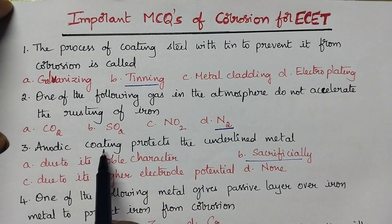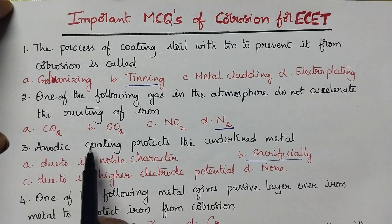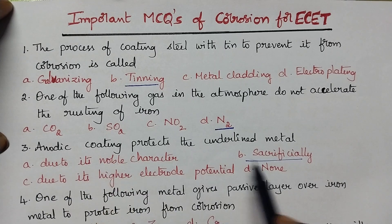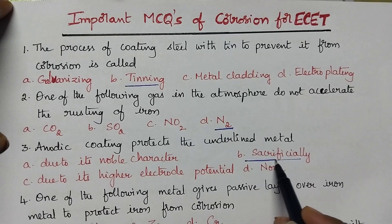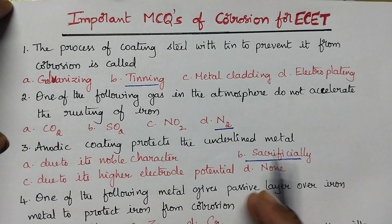Anodic coating protects the underlying metal. Anodic coating means that the metal will act sacrificially, so it protects the underlying metal sacrificially.